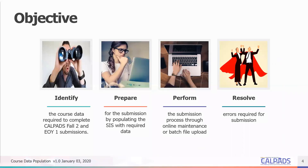Let's discuss the objectives of today's training. We first would like for you to be able to identify the course data requirements and complete the Fall 2 and end of year data submissions. We'd also like for you to be able to prepare for the submission by populating your local SIS with required data. An additional objective is for you to be able to perform the submission process through online maintenance or a batch file upload. And lastly, we'd like for you to resolve errors required for the submission.